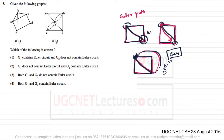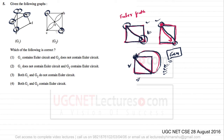An Euler path may exist but an Euler circuit does not exist when degrees are odd. In this graph, the degree of every vertex is even, therefore an Euler circuit exists. For both graphs here, the degree of these vertices is odd — therefore neither graph has an Euler circuit. Hence both g1 and g2 do not have any Euler circuit.